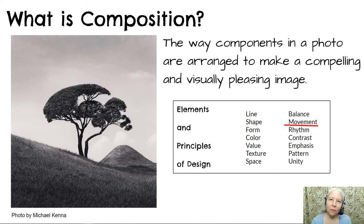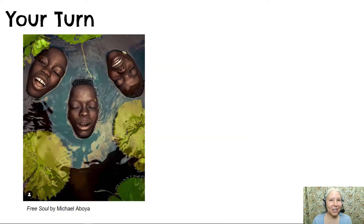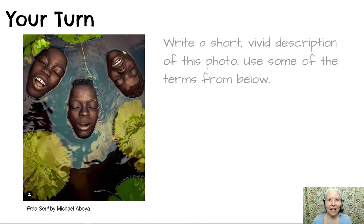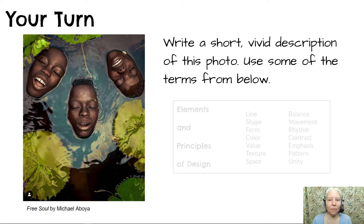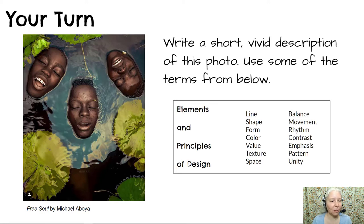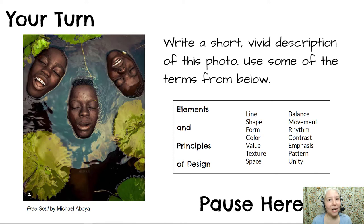Everybody sees different things in a photo, so if you look at this photo and you see different elements and principles, that's okay. Now it's your turn. Write a short, vivid description of this photo using some of the terms from the list of elements and principles. At this point, please pause the video and, if you haven't already done so, open your guided notes and complete this exercise.